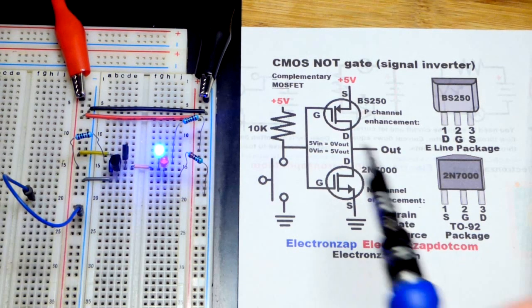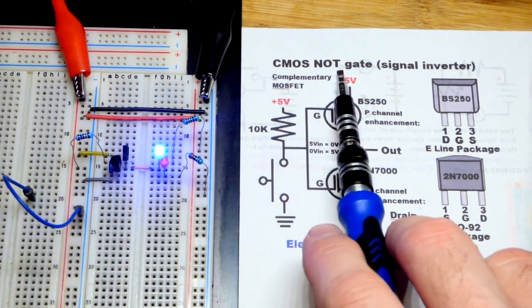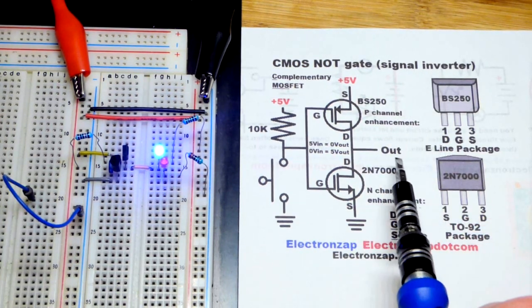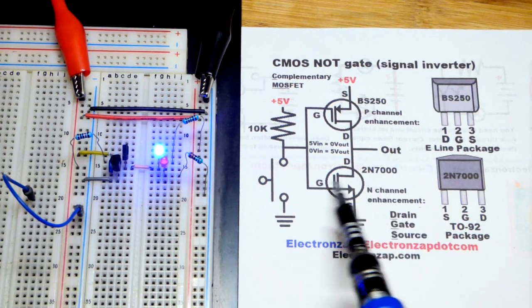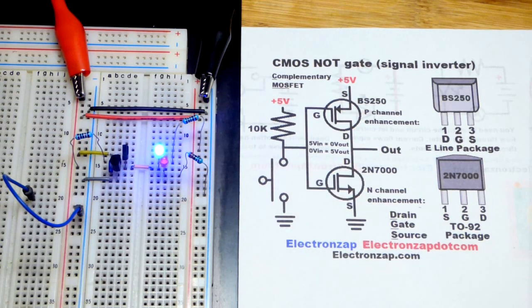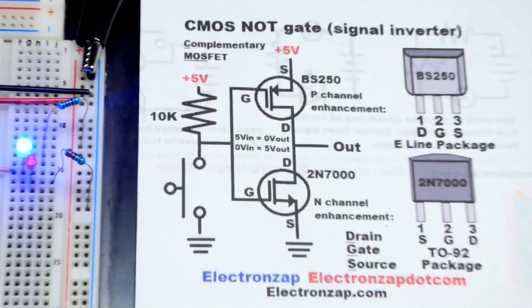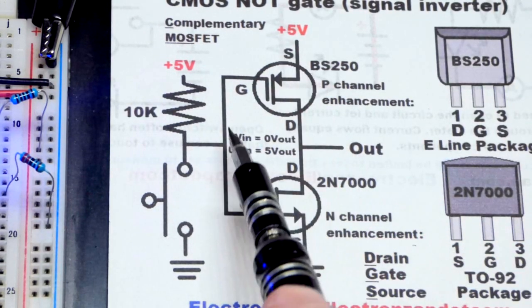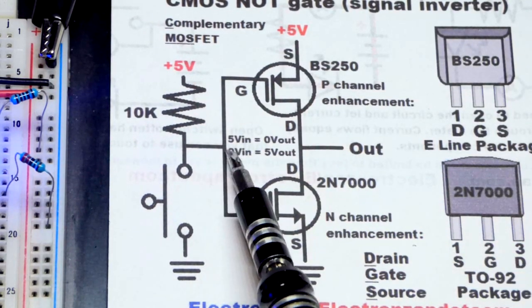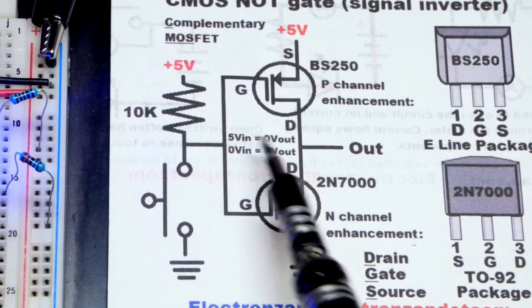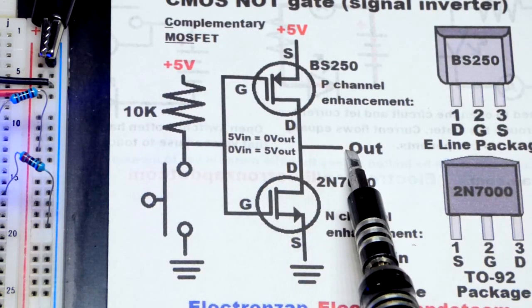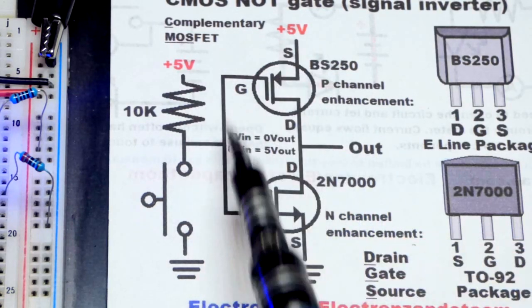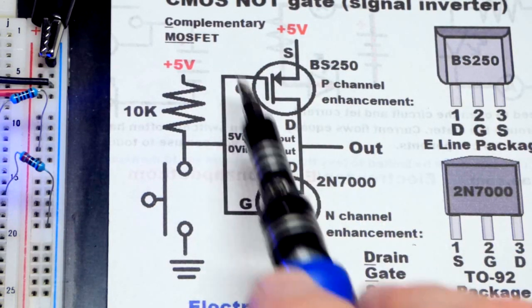So now in this video, we're going to look at a CMOS NOT gate. You could also call it a signal inverter or just inverter. What it does is it takes a voltage in, high or low voltage. In this case, we're going to use a five volt power supply. So if you got five volts to the input here, you will get zero volts out there. Zero volts is ground and five volts is the positive side of the power supply.